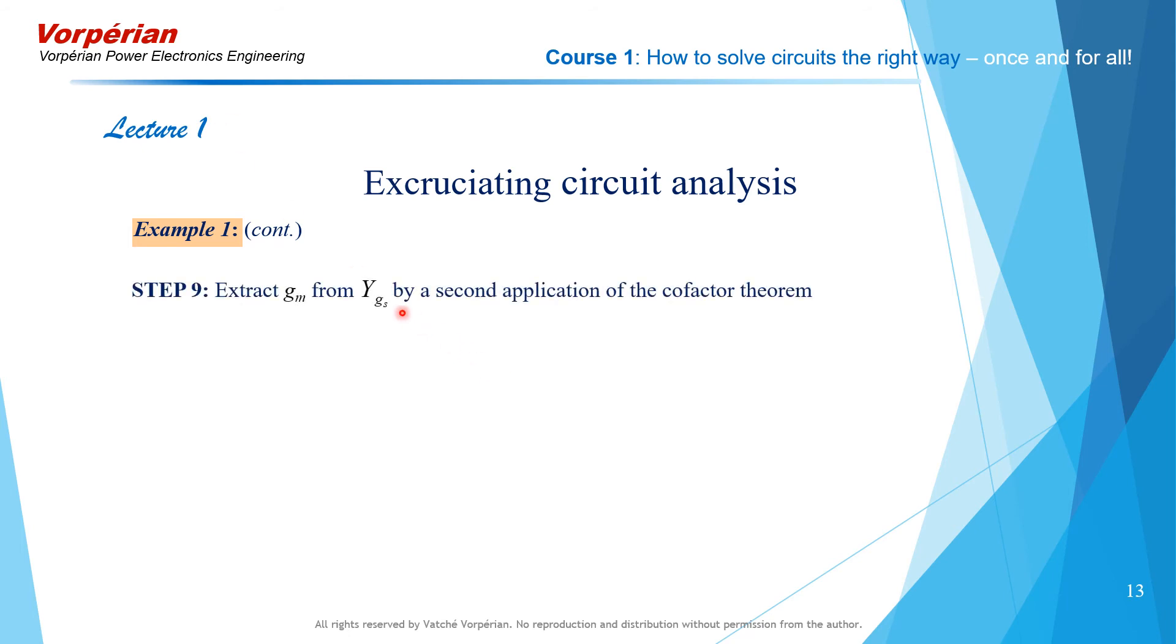We now extract gm from y_Gs by a second application of the cofactor theorem. In the first term, we set gm equal to 0, and in the last one, we eliminate gm by the operations indicated earlier.